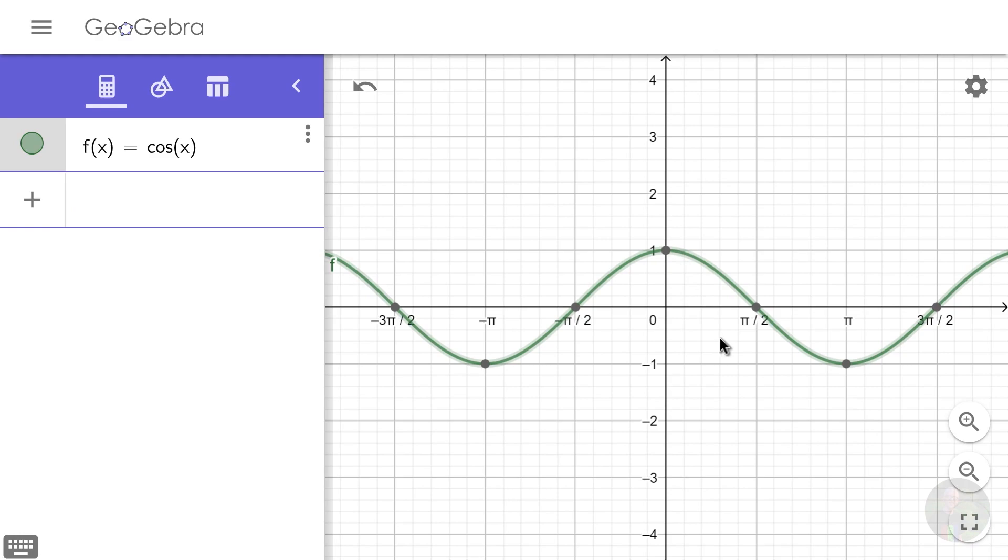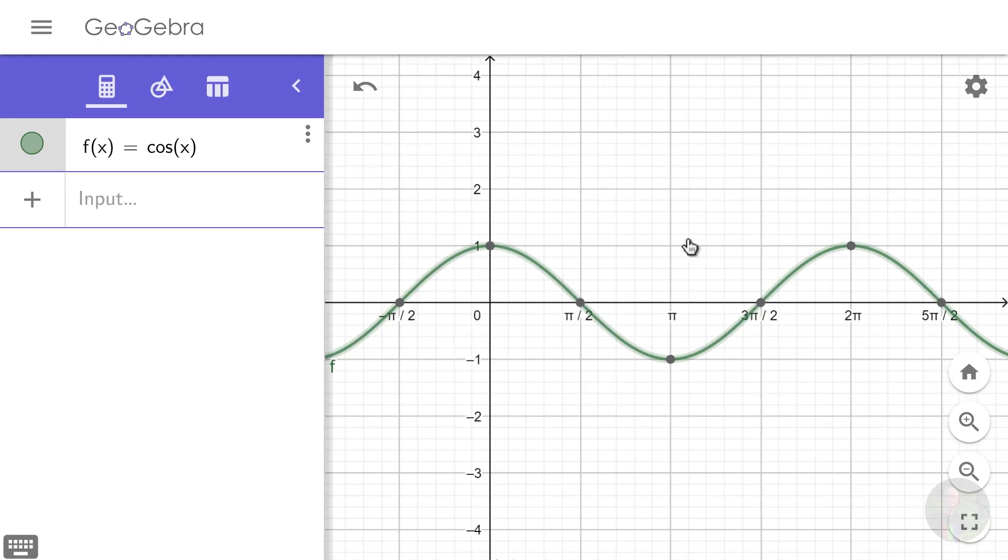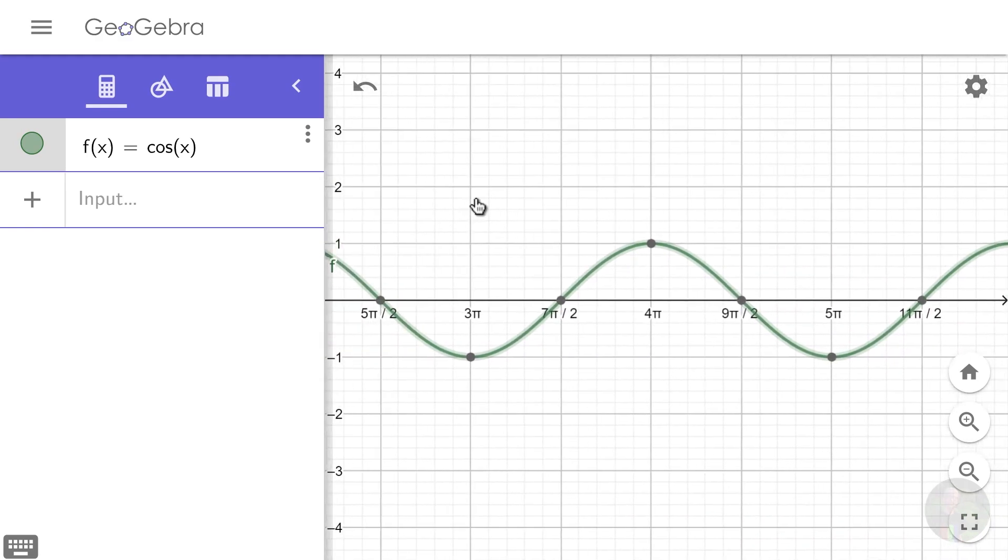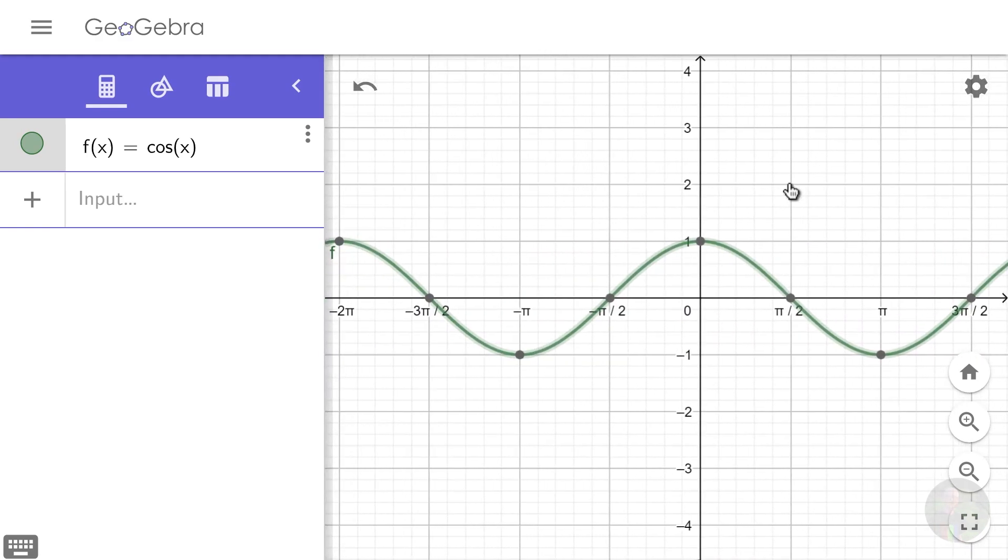When the value of x is pi halves, or 90 degrees, the value of cos is 0. When the value of x is pi, or 180 degrees, the value of cos is negative 1, and so on. And after 2 pi, it again repeats itself, so it is periodic with the period 2 pi. Now let's try to mess around with this function and see what happens.